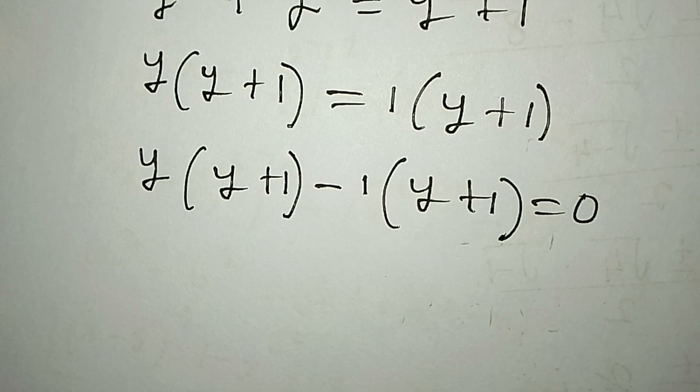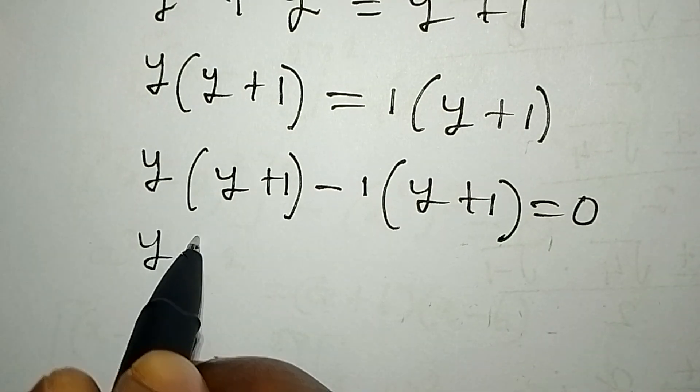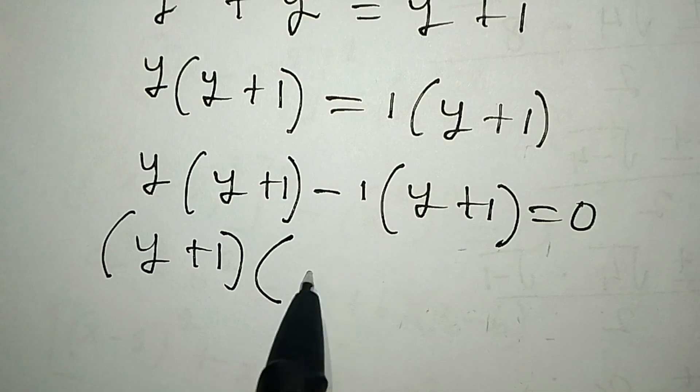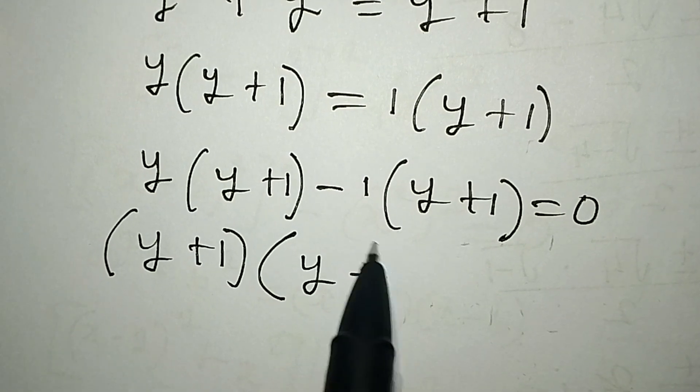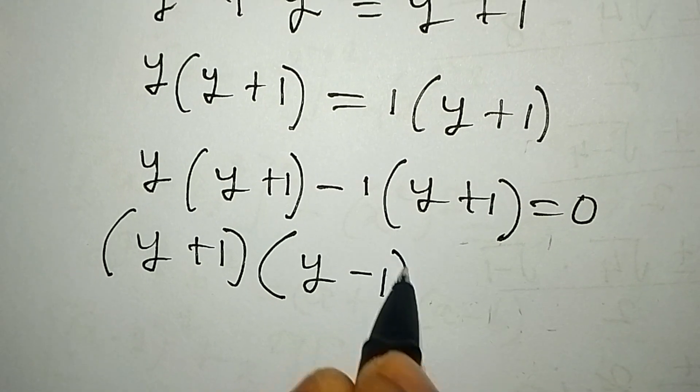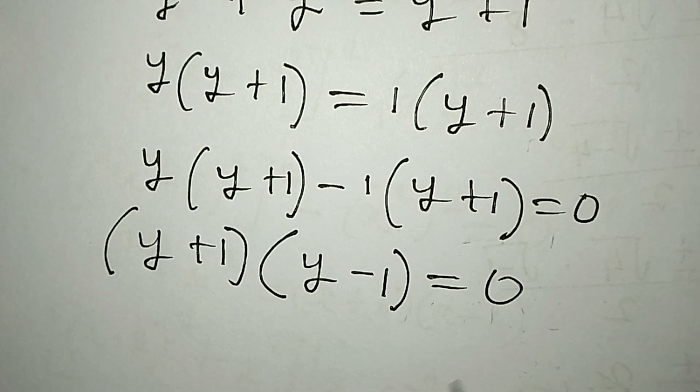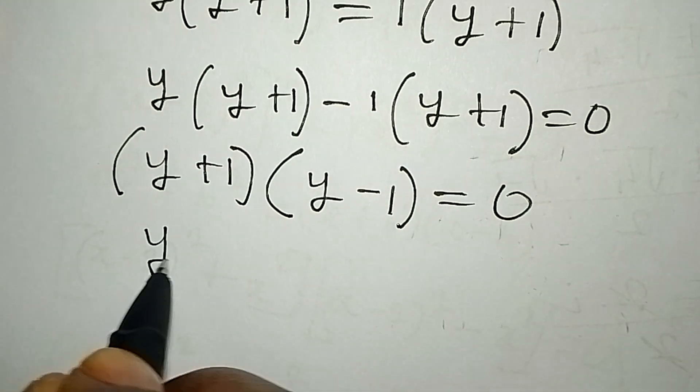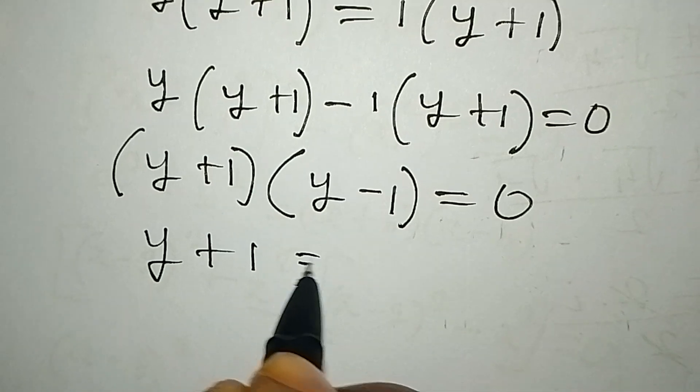From here, the common factor is y plus one. Then we have y minus one left, so this equals zero. Now apply the zero product rule: y plus one equals zero, or y minus one equals zero.